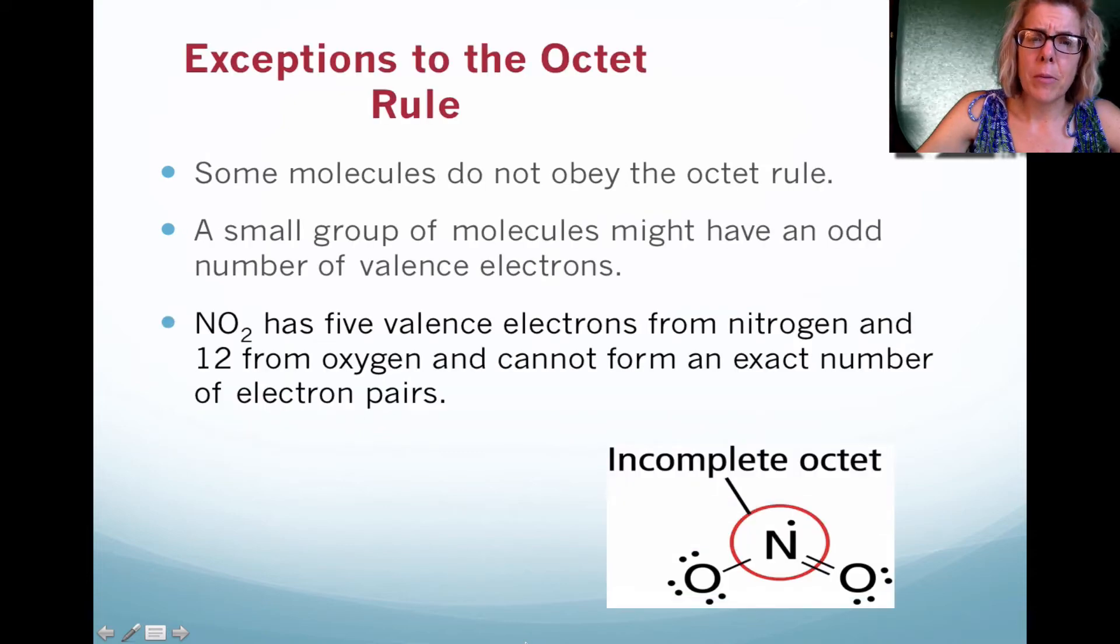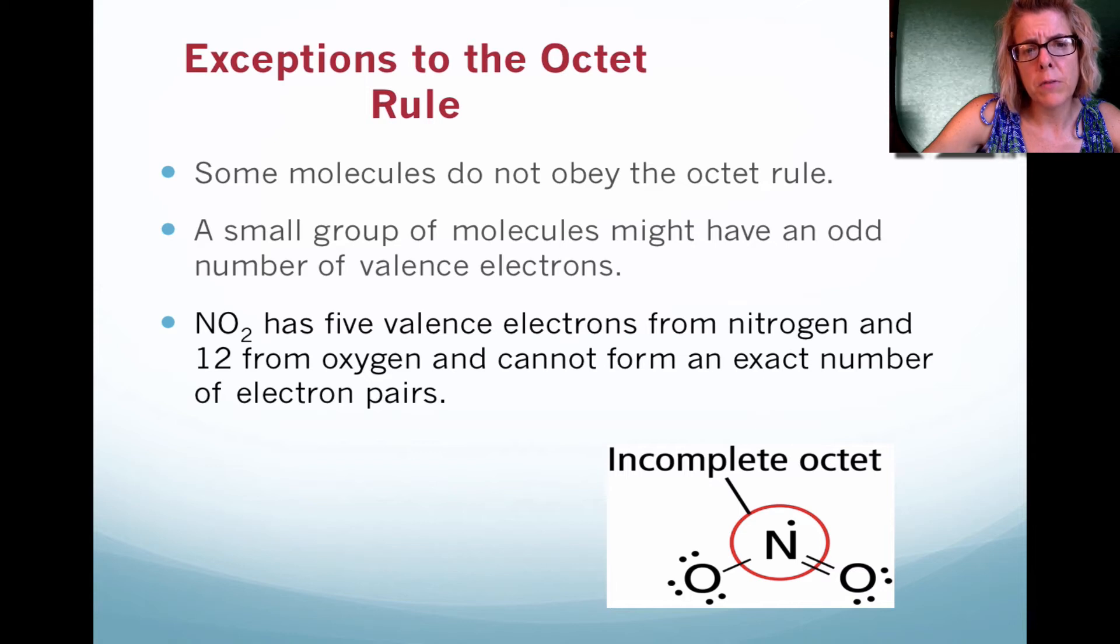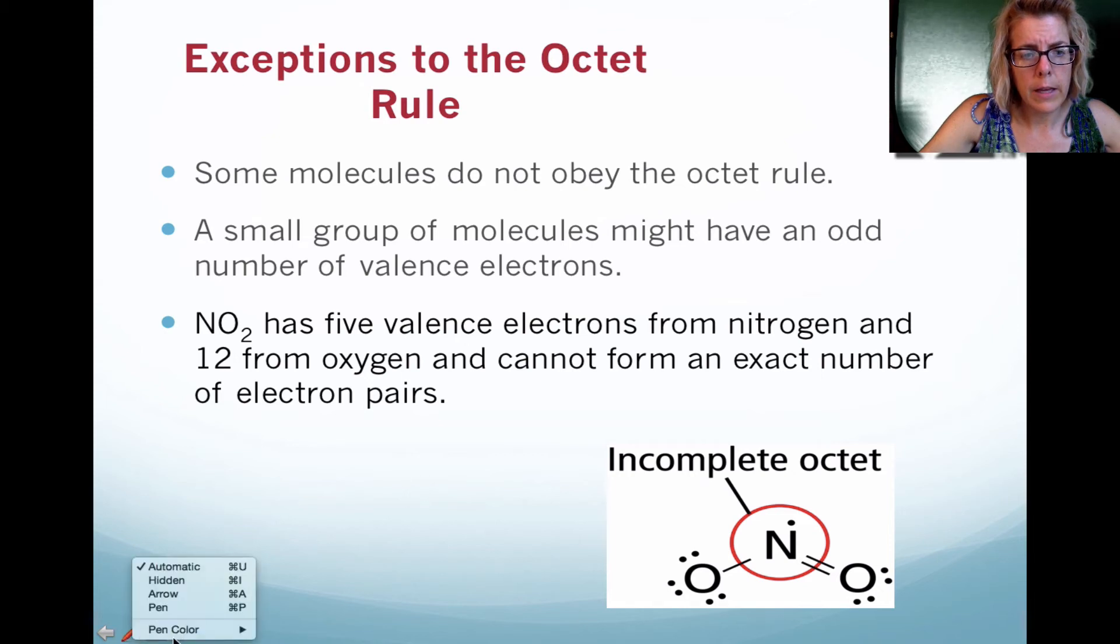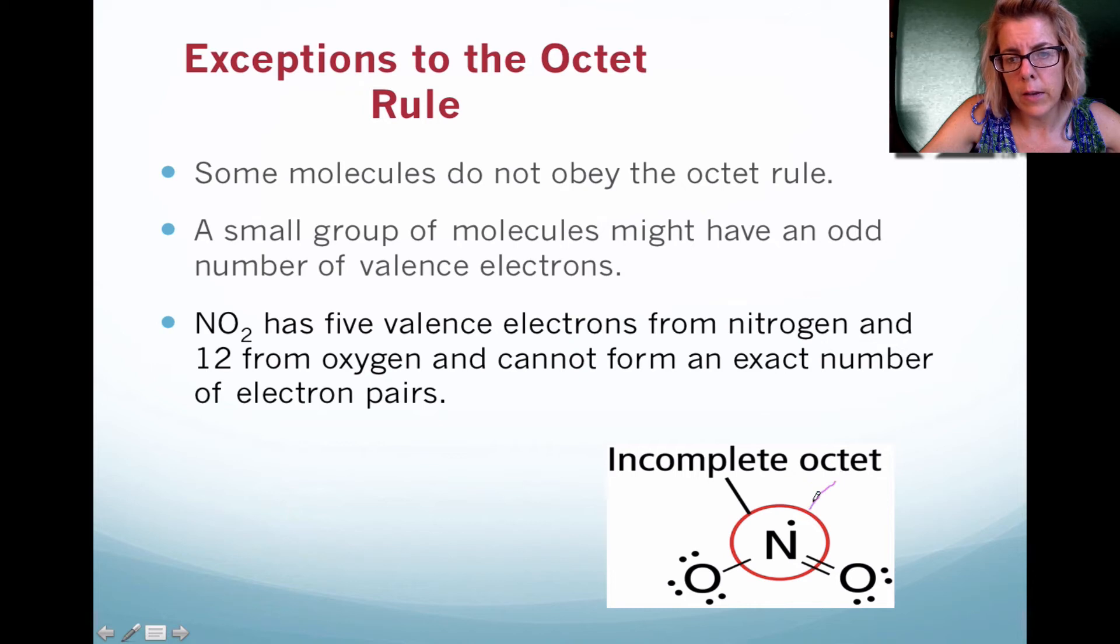We can have exceptions to the octet rule. There are some molecules that have potentially odd number of valence electrons. In the drawing at the very bottom of this slide here, you see the fact that oxygen only has one valence electron, and typically they occur in twos. But because of the molecule here, it's an incomplete octet.